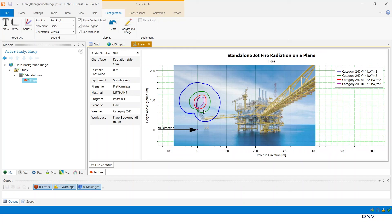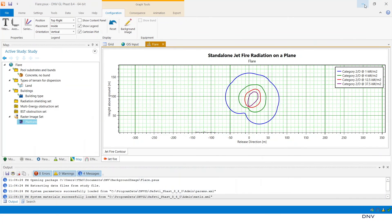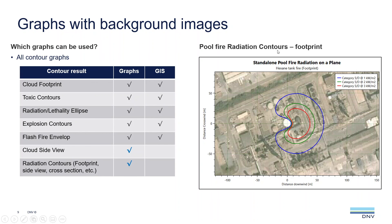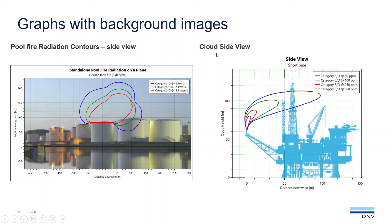You can zoom in and zoom out, and the background image will also zoom in and zoom out accordingly. Which graphs can we add a background image to? In theory, we can add a background image to all contour graphs listed in the table. However, since the first five graphs are already available as GIS results, there is no need to use this method for those. We can use the background image for cloud side view and radiation contours. We have just demonstrated a jet fire radiation contours side view. Here is an example for pool fire radiation contours footprint, one for pool fire radiation contours side view, and one for cloud side view.